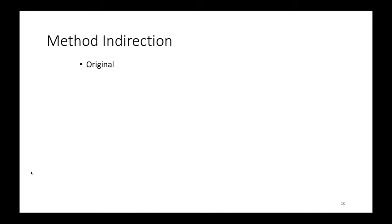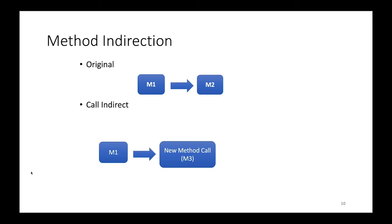For method indirection, what we have is a method m1. And let's say m1 traditionally called m2. And if you look at the method called graph, that one you find. What change would be creating another method in the middle between m1 and m2. So that m1, instead of calling m2 directly, it will call another method. And that method, in effect, call m2. So this, in effect, change the method called graph of the program.